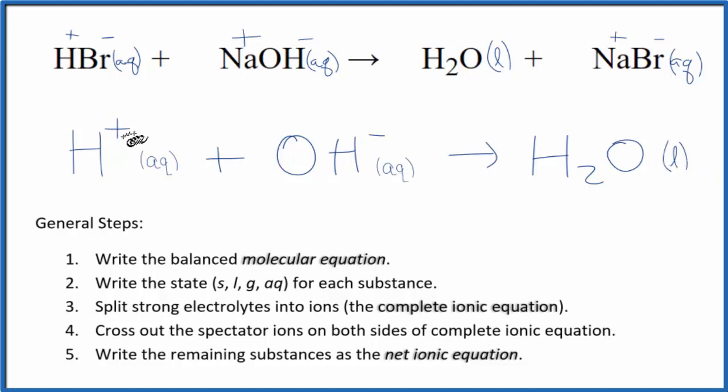We have one, two hydrogen atoms. We have two hydrogen atoms. One oxygen atom, one oxygen atom. So this is the balanced net ionic equation for hydrobromic acid plus sodium hydroxide.